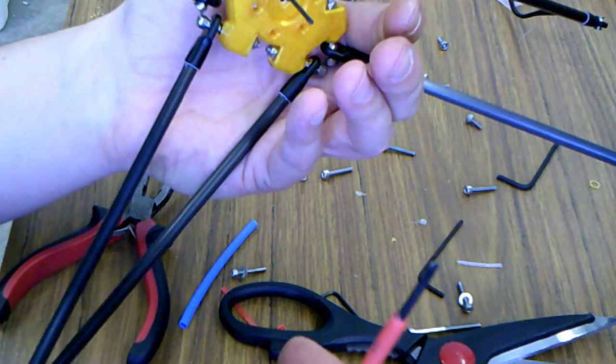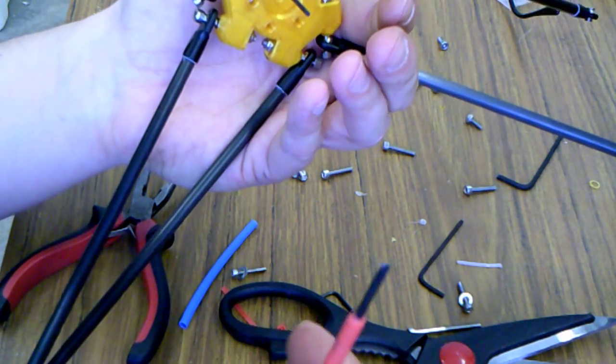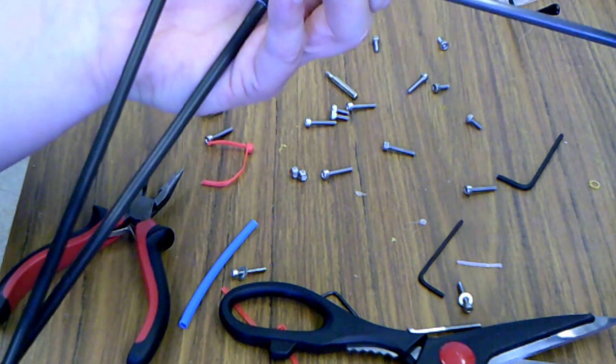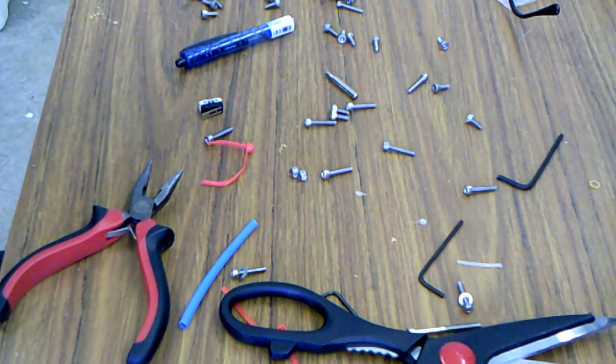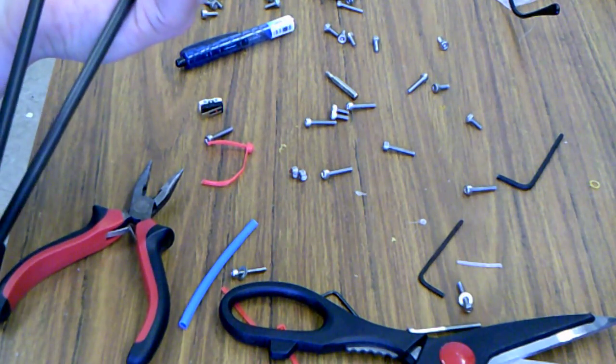We're going to mount the extruder on the top, which is just two screws. Then we're going to be good to go. We're going to calibrate it. So let's go ahead and do the extruder.